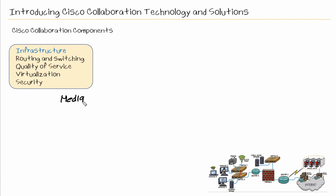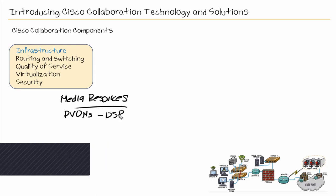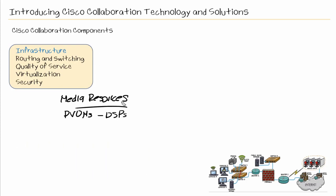So, part of our infrastructure, we also have our media resources. So, we could have voice gateways that have PVDMs, which stands for Packet Voice DSP Module. And, they contain these DSPs, which stands for Digital Signal Processor. And, these are really onboard chips that allow us to have hardware-based media resources.